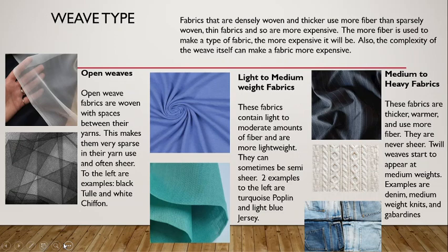Generally, fabrics that are densely woven and thick use more fiber than sparsely woven thin fabrics, and so are more expensive. If a fabric is thick, bulky, and heavy, more material is used — more material equals more expensive. Light, thin, almost translucent or sheer fabric uses less fiber and so is less expensive. The more fiber used to make a fabric, the more expensive it will be.